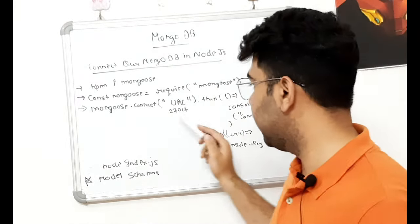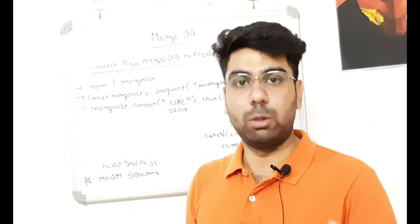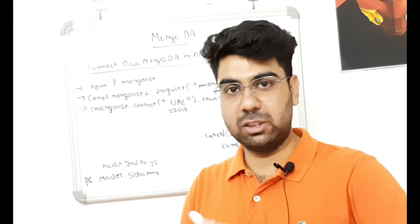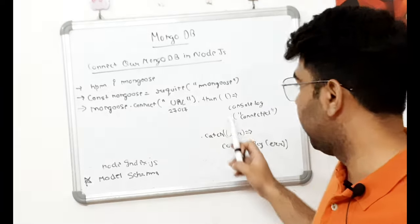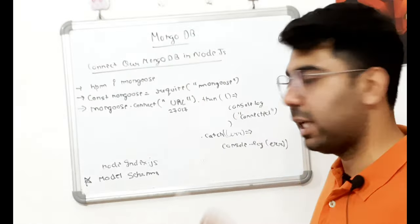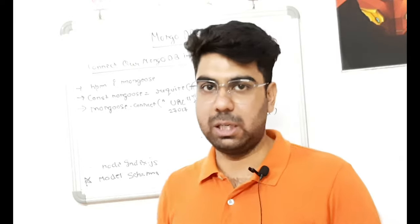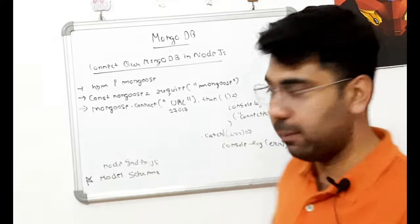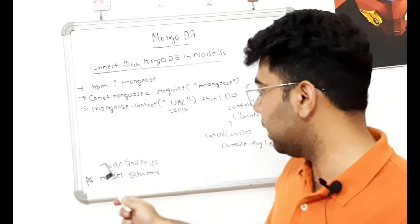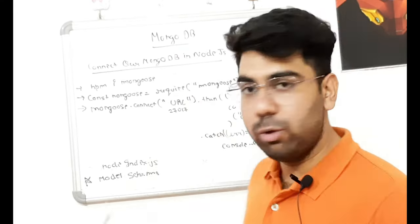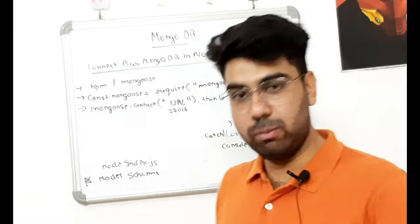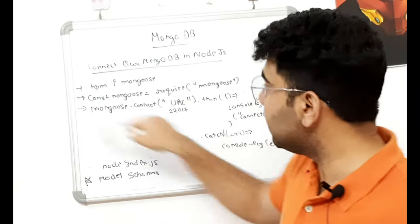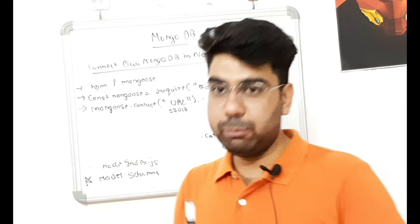After calling mongoose.connect() with the URL, it returns a promise. We chain .then() — if the connection is successful — and .catch() to handle errors if the connection fails. Once this is set up and we run node index.js, the console output will confirm our MongoDB is connected. These are the main three steps to connect MongoDB to Node.js.